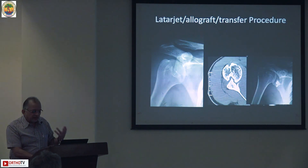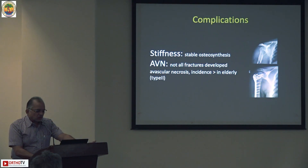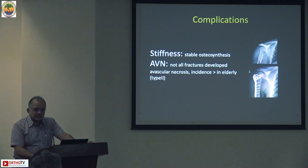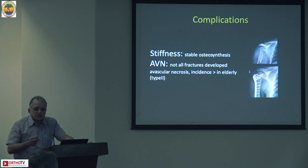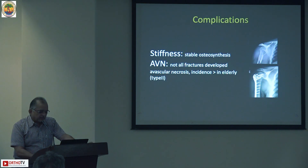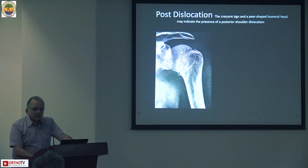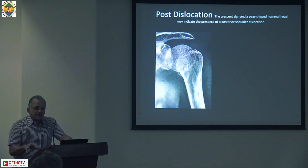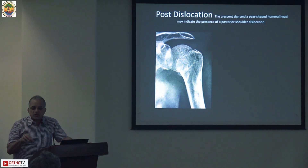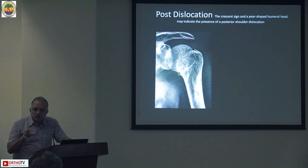Complications of these fracture dislocations include stiffness - basically if you have immobilized for a longer time - and AVN, which is not predictable in anterior fracture dislocations. In summary: know how to reduce it, understand the factors responsible, and by doing a simple tenotomy you can achieve a good reduction.